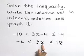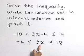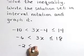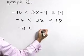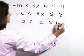As the next step now, let's divide each piece by 3 to isolate x in the middle. Negative 6 divided by 3 is negative 2. 3 over 3 cancels, leaving us with 1x. And 18 divided by 3 is 6.